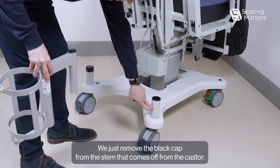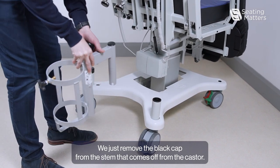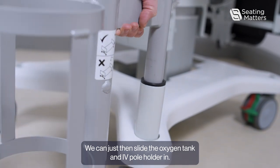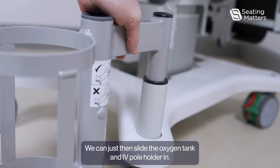We just remove the black cap from the stem that comes up from the caster. We can just then slide the oxygen tank and IV pole holder in.